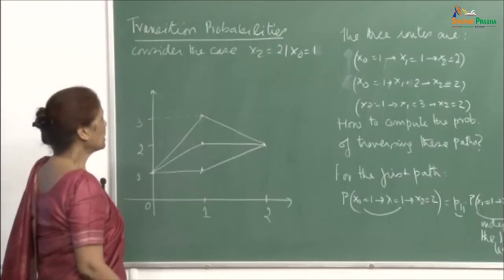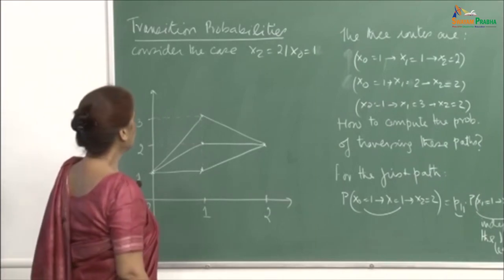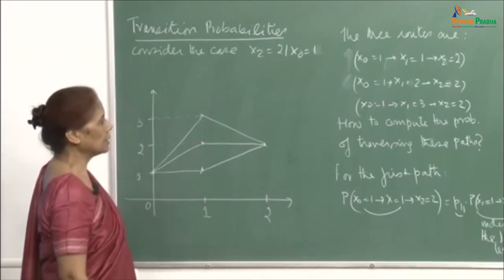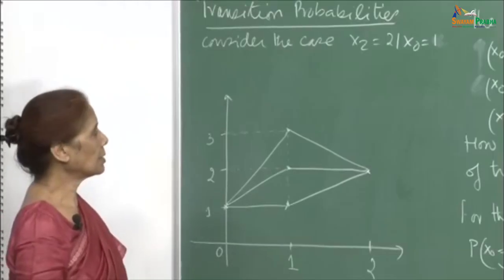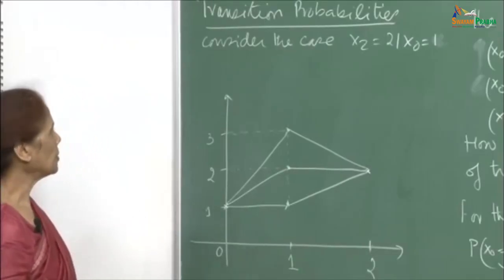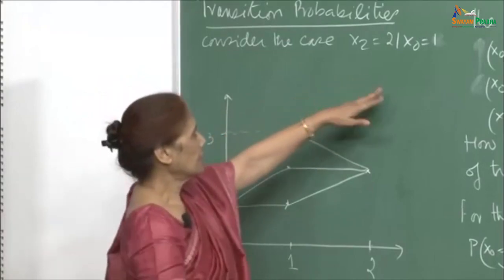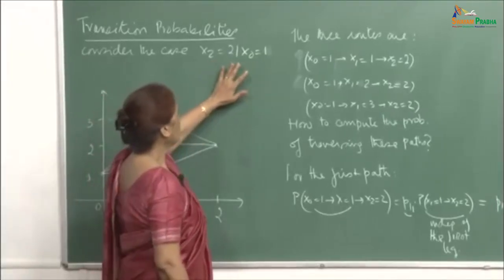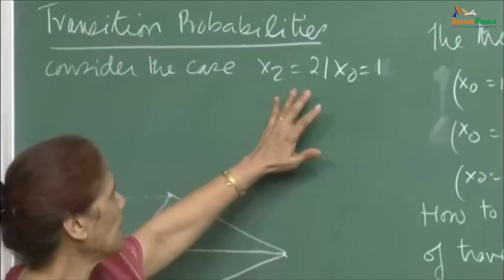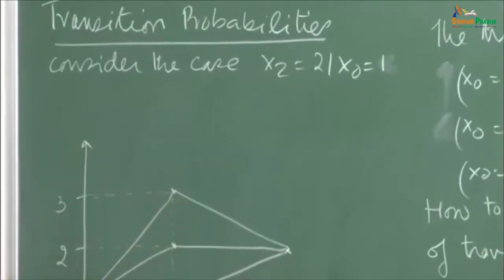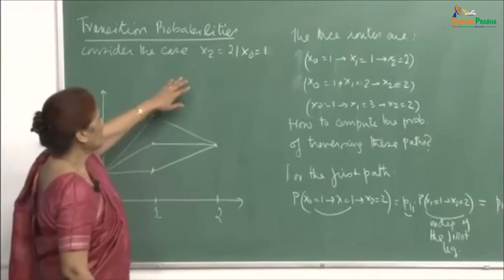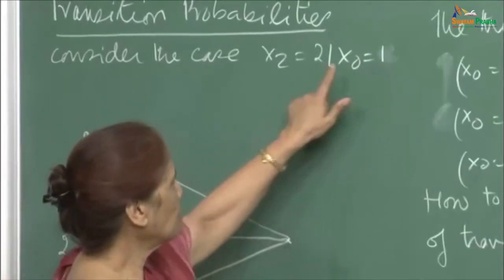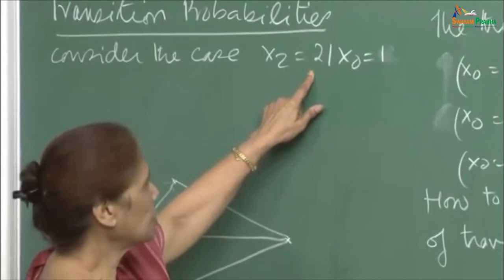I will continue the discussion about computing transition probabilities. I showed you one-step transition probabilities, and we had just started talking about two-step transition probabilities. Consider the case: in the last lecture I considered x₂ equal to 1, x₀ equal to 1. Now let us look at x₂ equal to 2 and x₀ equal to 1. In that case, what are the possible routes of transitioning from initial state 1 to state 2 in two steps?